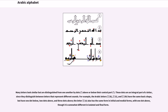Many letters look similar but are distinguished from one another by dots above or below their central part. These dots are an integral part of a letter, since they distinguish between letters that represent different sounds. For example, the Arabic letters B, T, and TH have the same basic shape, but have one dot below, two dots above, and three dots above.